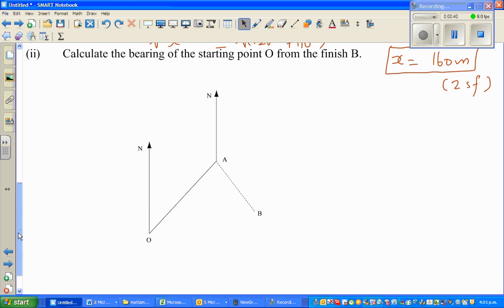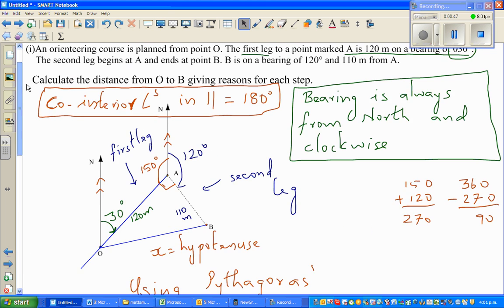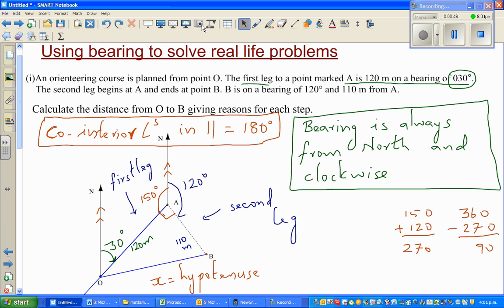Now the next part is calculate the bearing of the starting point O from B. Bearing is always from north and clockwise from north. Whenever you have bearing you always have to draw a north and you go clockwise from the north.